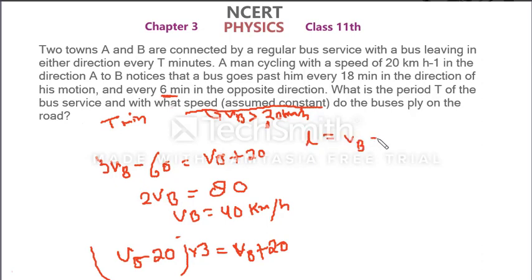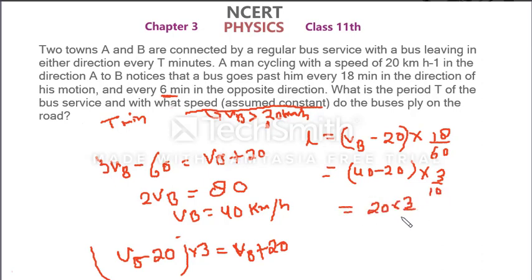Now 40 km per hour, we will find length. L is equal to what was VB minus 20 into 18 by 60. VB value 40 minus 20 into 18 by 60, this is 6 by 10. 20 into 3 by 10, so L equals 6 km.